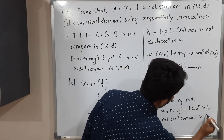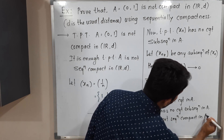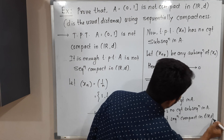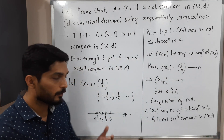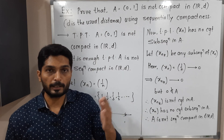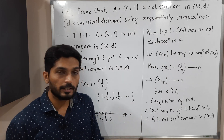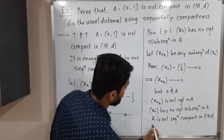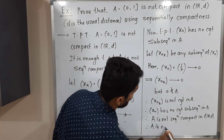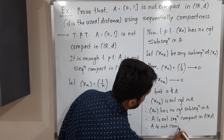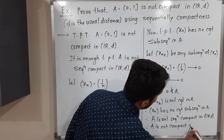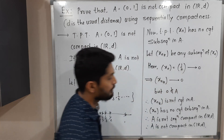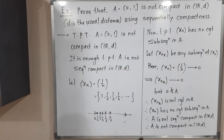A is not sequentially compact in ℝᵈ. Using the result that compact implies sequentially compact and sequentially compact implies compact, since we have not sequentially compact, it follows that A is not compact in ℝᵈ. In this way we proved the given set A is not compact in ℝᵈ using sequential compactness.